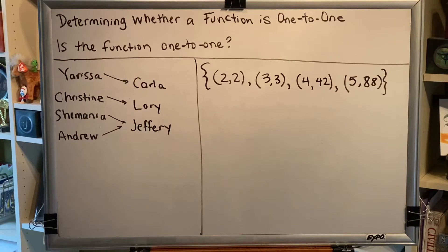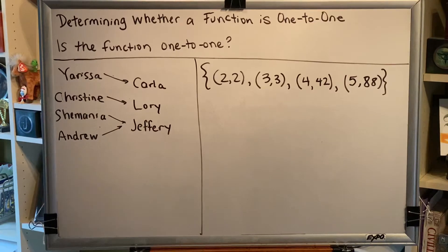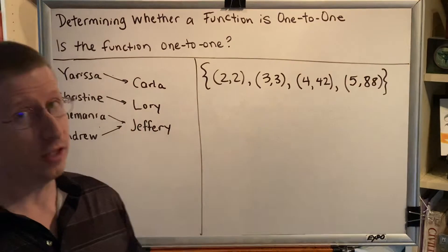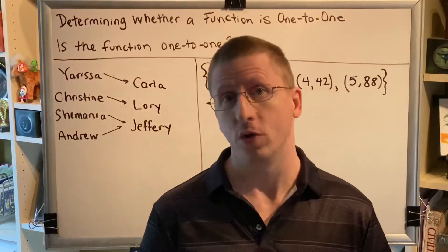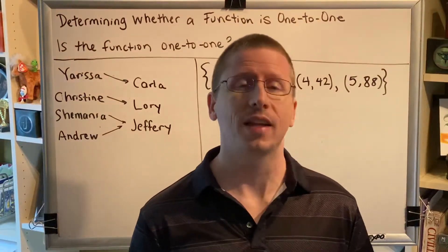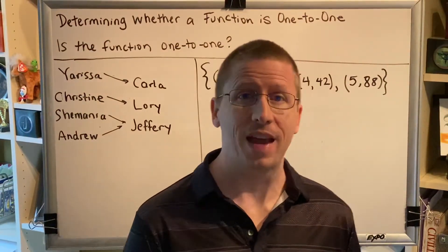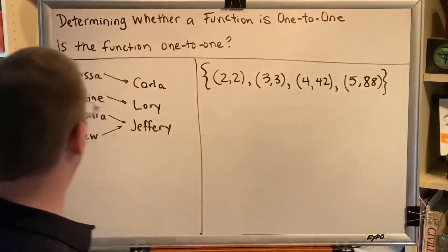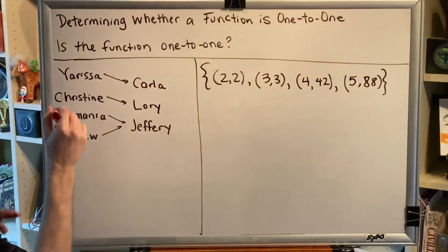A function is one-to-one if, for any two different inputs, you get two different outputs. This means you can prove something is not one-to-one if you can find two different inputs that lead to the same output, like here.